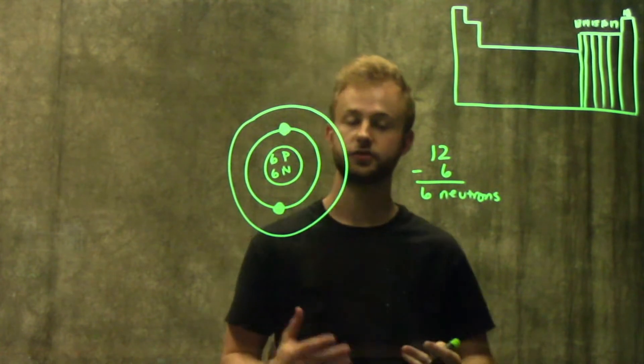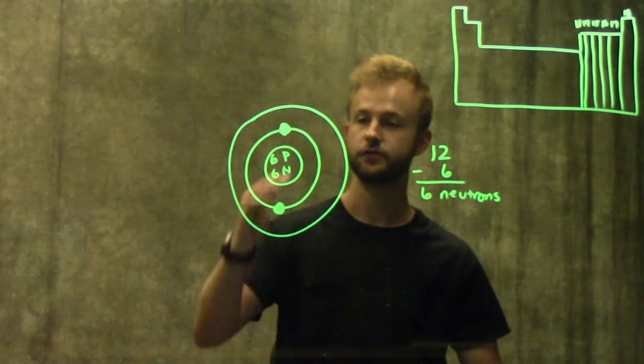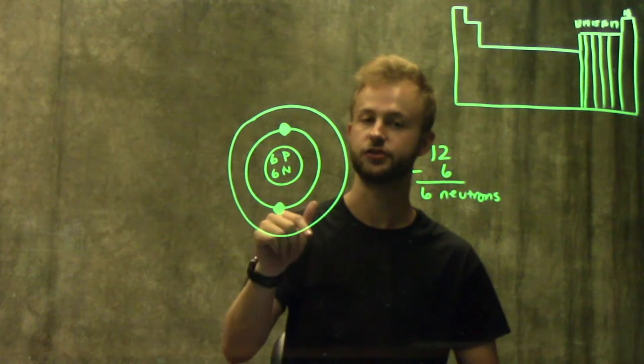We also know that since this carbon atom was neutral, and we have six positive charges, we need six negative charges. So now we've used two electrons, which means we have four electrons left to put in this last shell.